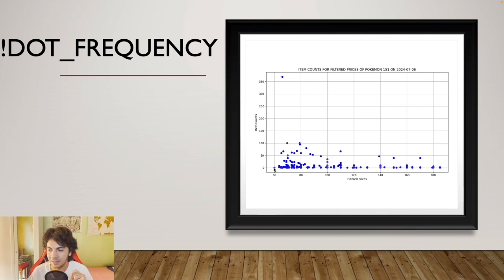What does it do? Every dot is a listing, and you have price on the x-axis and supply on the y-axis. So a dot here will tell you that there is one listing that has over 350 boxes of 151, Japanese 151, and they are listed at roughly 70 euros, maybe a bit below 70 euros, as you can see here. It falls down here.